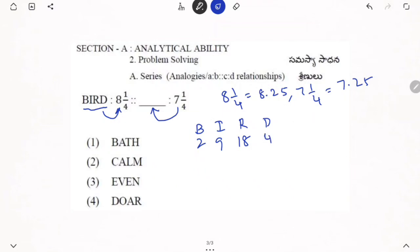Now we calculate the sum here. 2 plus 9 is 11, 11 plus 18 is 29, 29 plus 4 is 33. Number of letters, how many here? BIRD are 4. So if you see here 8.25, what is the relation between 8.25 and 33? If you divide by 4, we will get 8.25, that is 8, 1 by 4. Right? So this we have solved here.